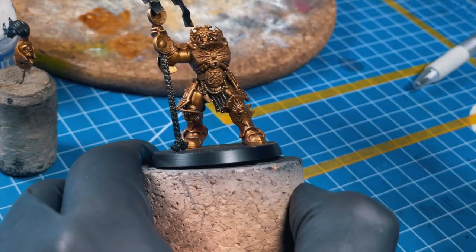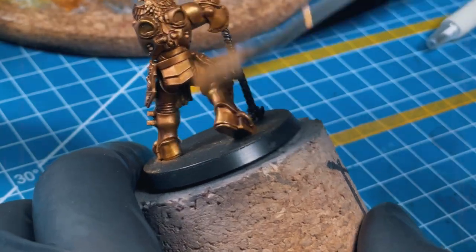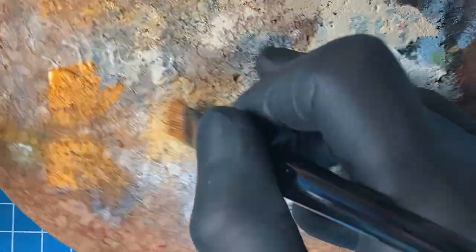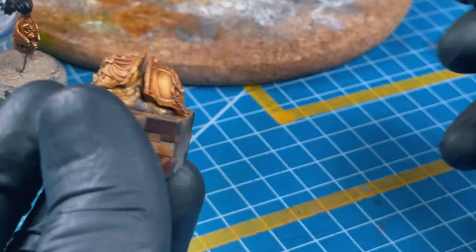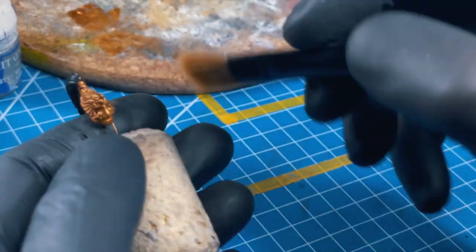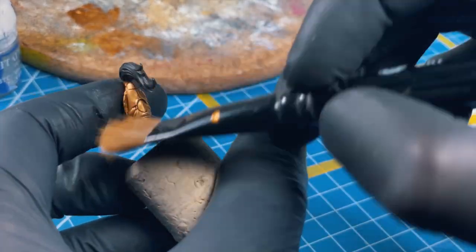Grab the Retributor Gold Armor and put some on your cork. Work off the excess paint on the palette, and now start moving all around the miniature. We want to get this shiny gold back again on all of the most raised edges.